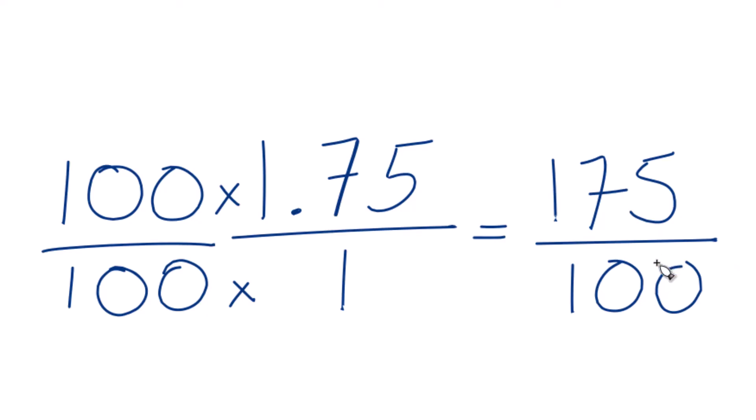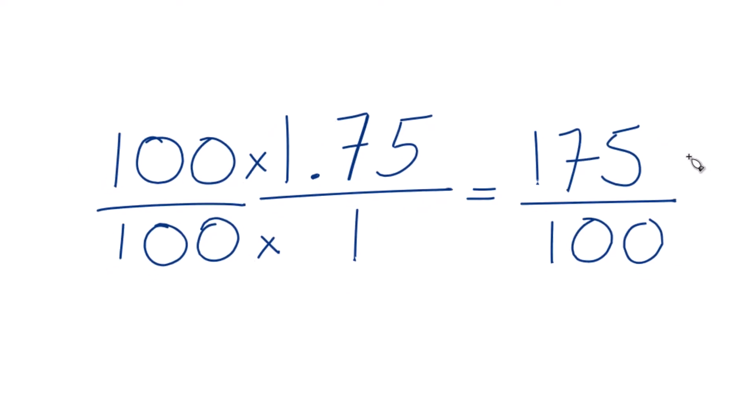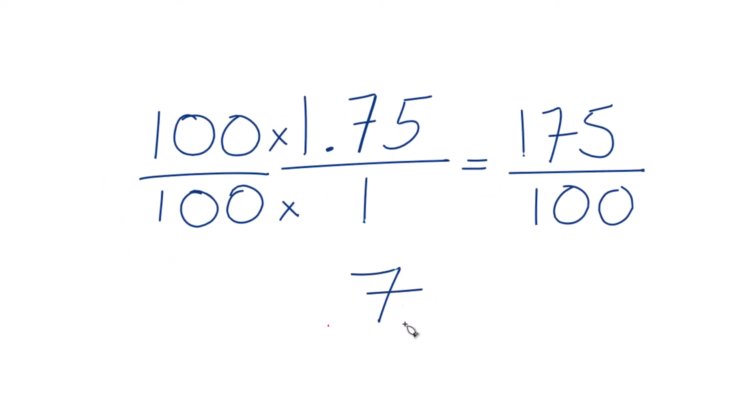This isn't in lowest terms. To simplify this, looks like 5 would go into both numbers here, and 25 as well. So 175 divided by 25 is 7, and 100 divided by 25 is 4. So we end up with 7 fourths.